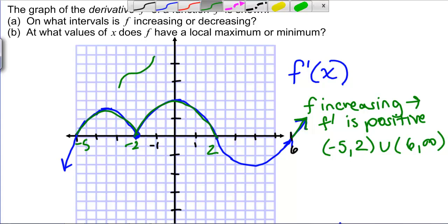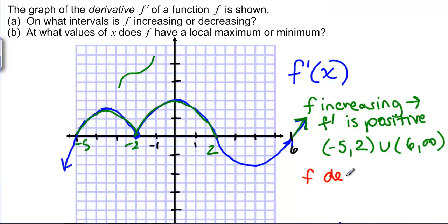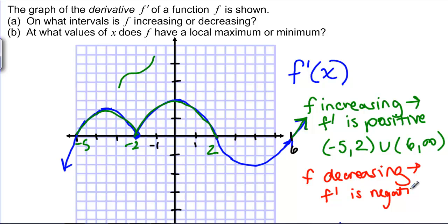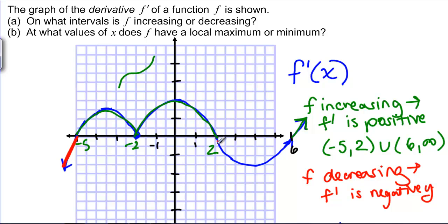When is F decreasing? F is decreasing whenever F-prime has a negative Y-value, and so that would be from negative infinity to negative 5, and from 2 to 6.